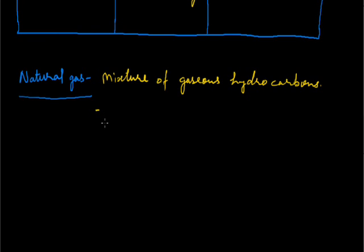It mainly consists of methane, that is about 85%, ethane, propane and butane. These are the main constituents. Others which are present in small amounts are carbon dioxide, nitrogen, oxygen, hydrogen sulfide and sometimes helium.